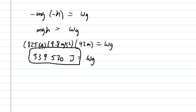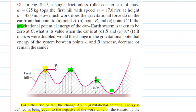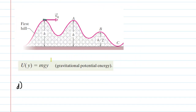In the next parts, we are told that the gravitational potential energy of the Earth-car system is taken to be zero at point C. We need to calculate the gravitational potential energy when the car is at points B and E. The ground level at point C is defined as a height of zero. Looking at the diagram, the height from point C up to point B is simply H divided by 2, which we'll plug in for the height in the equation.